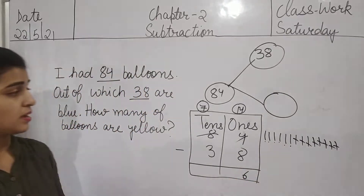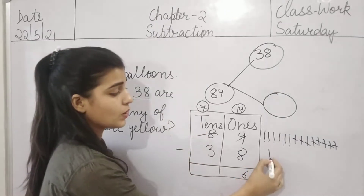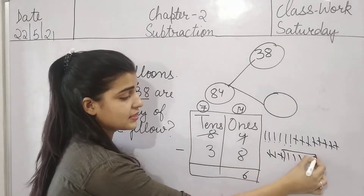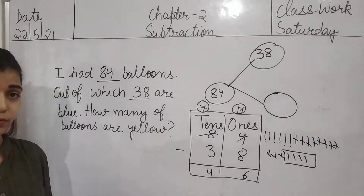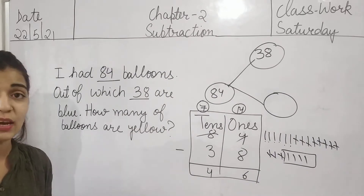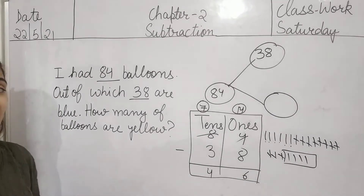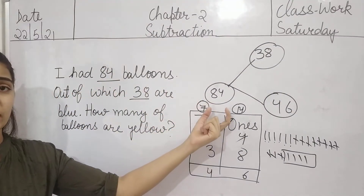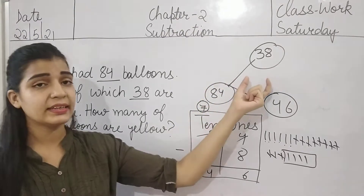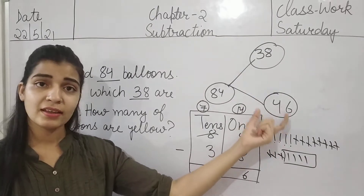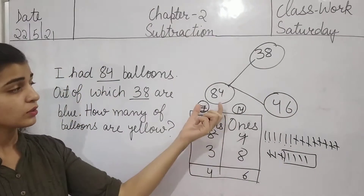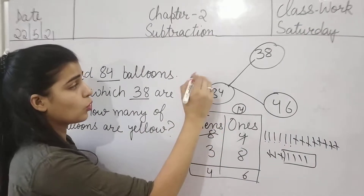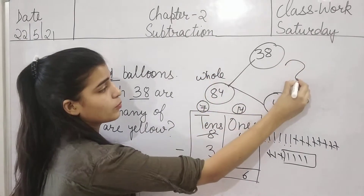Only 6 ones are left. Now come to the tens column. 7 minus 3 — how many tens are left? 4. So we can write here 4. It means 46 balloons are yellow — 46 balloons are yellow. So 84: 38 and 46 are the parts of this whole. This is the whole and they both are parts.